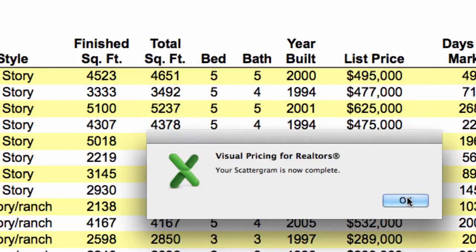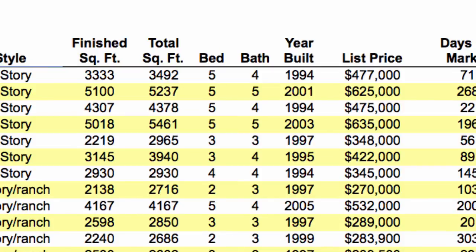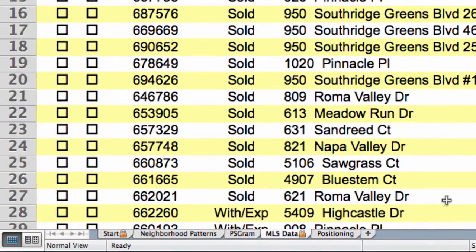Okay, the scattergram is complete. Now to find the scattergram, we notice that there's now a new tab down below, which is labeled PSGram, which is short for Pricing Scattergram. When we select this tab, we'll be able to see the scattergram.